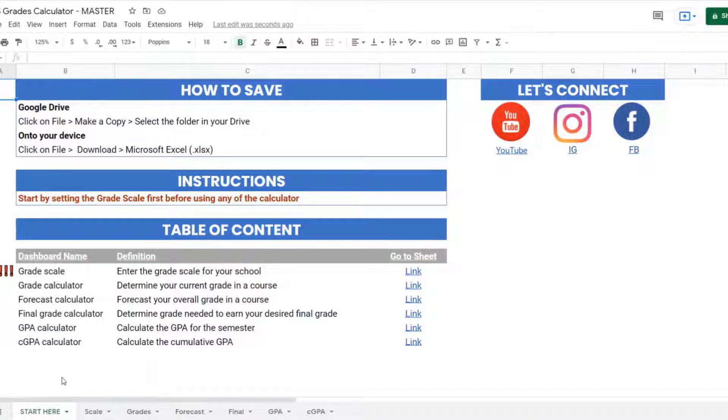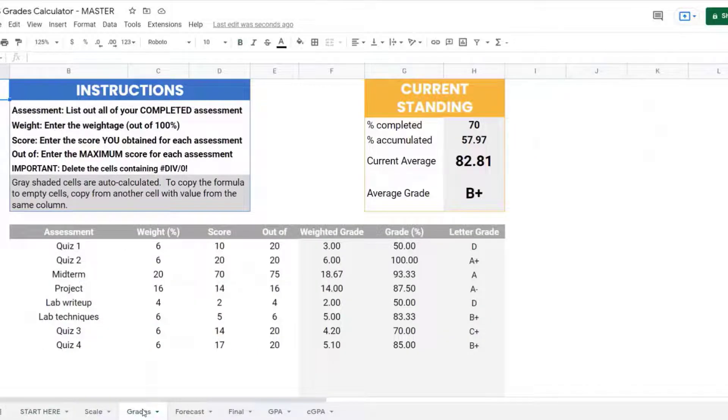I've created this grade calculator to help my Simplifiers community keep track of their performance. You can enter all your assessments in this grade spreadsheet to find your current grade. In this example, the percent accumulated in 70% coursework is 57.97. That's your current grade.